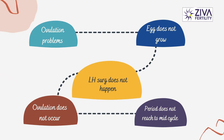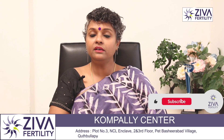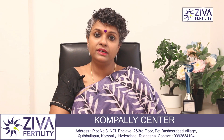With rising estrogen, we get a clue that the egg is also growing, and with the rising estrogen, the LH surge happens which results in ovulation. So it's very important to have the right levels of estrogen values as the period reaches mid-cycle.